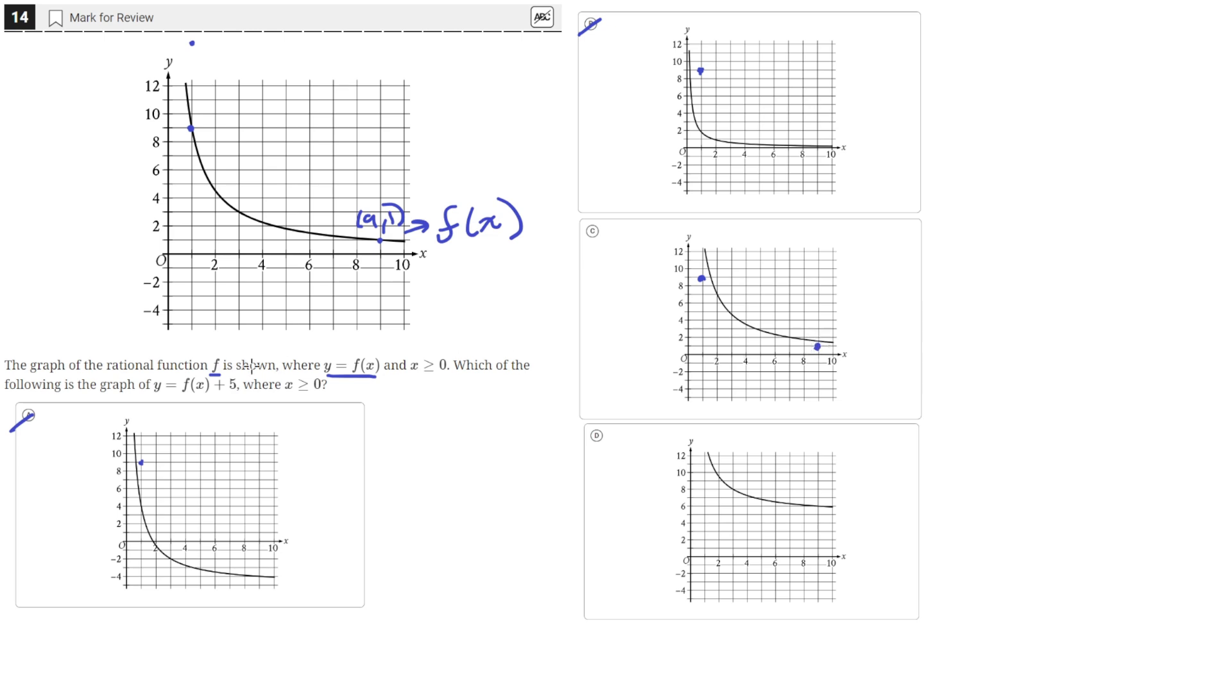The graph of y equals f of x plus 5 tells us that at the x value of 9, the value of f of x is 1. That means the value of y should be 5 more than that, so it should be at 6. But the graph is not here at 6, so C cannot be correct.